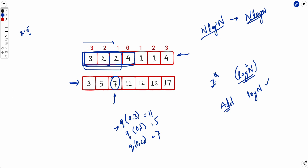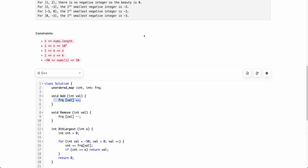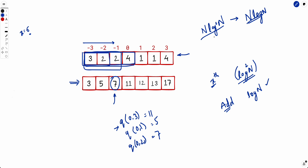I encourage you to code the O(n log² n) solution yourself. If you're not familiar with segment trees, I've uploaded a detailed series on segment trees starting from scratch — I'll link the playlist in the description. We can also reduce the complexity further from O(n log² n) to O(n log n) using binary search within the segment tree itself — that will be covered in the next segment tree series video. Feel free to post questions in the comments. If you liked the video, give it a thumbs up and subscribe. See you in the next one!